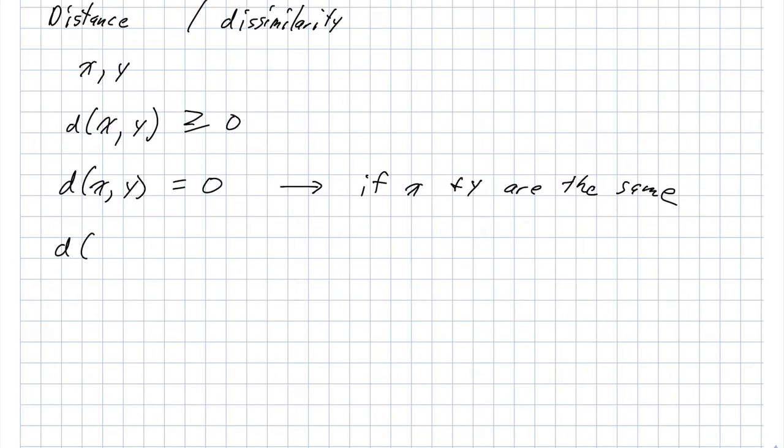We also want our distance metric to be symmetric, meaning the distance from x to y is always equal to the distance between y and x. So this is our symmetry.